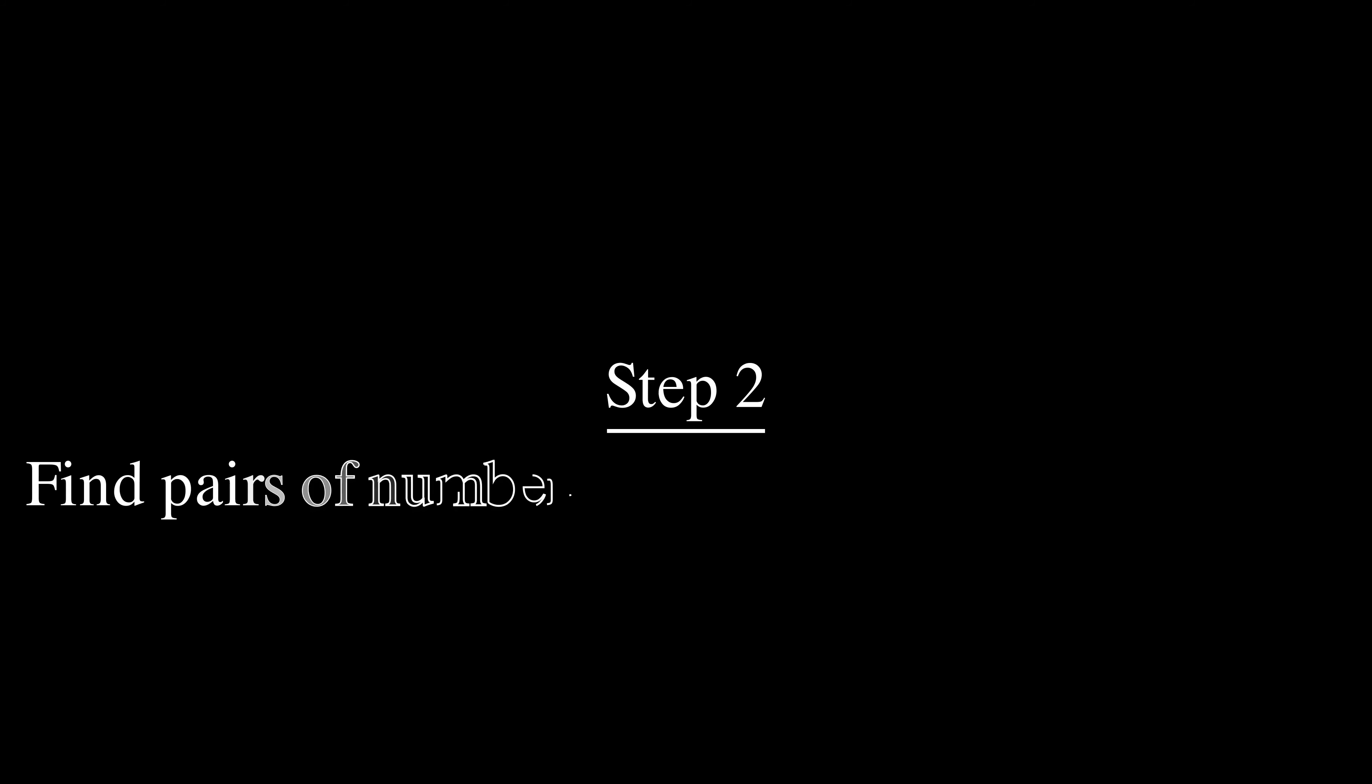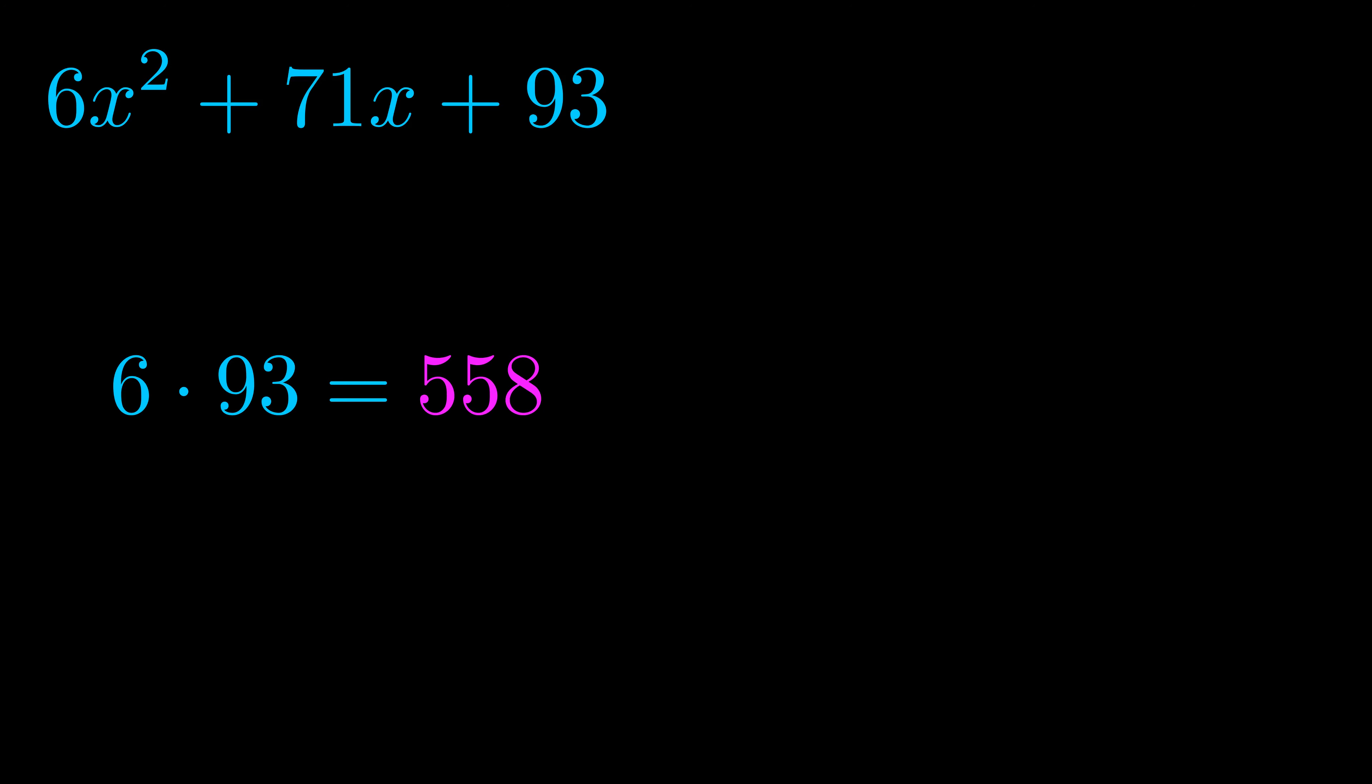Step two is to try to find all of the pairs which multiply to this number. Now it turns out you don't really need to find all of them, but go ahead and write down as many numbers as you can that multiply to the magenta value for now. Pause the video and resume when you're ready to continue. Okay, here's what I came up with.